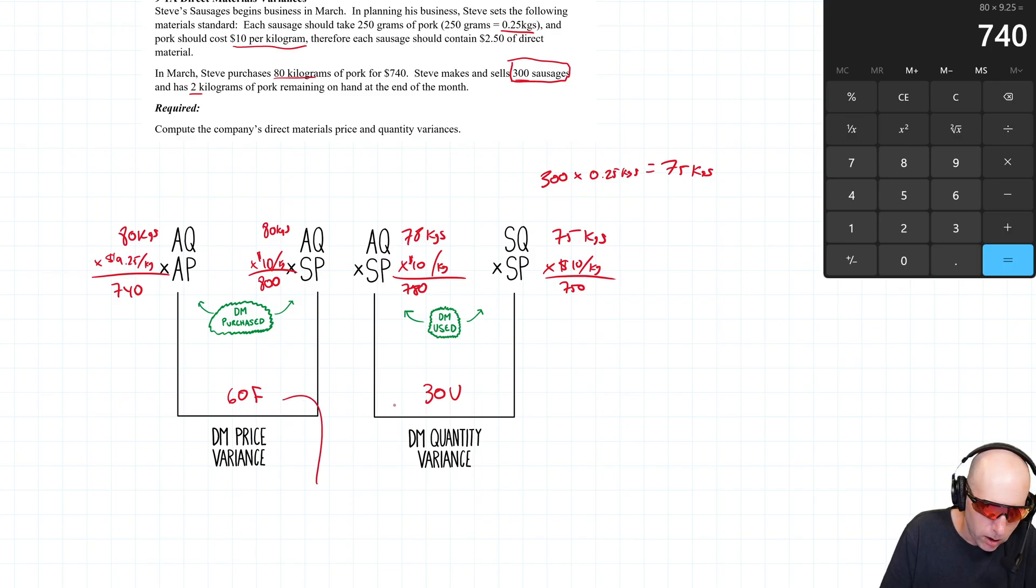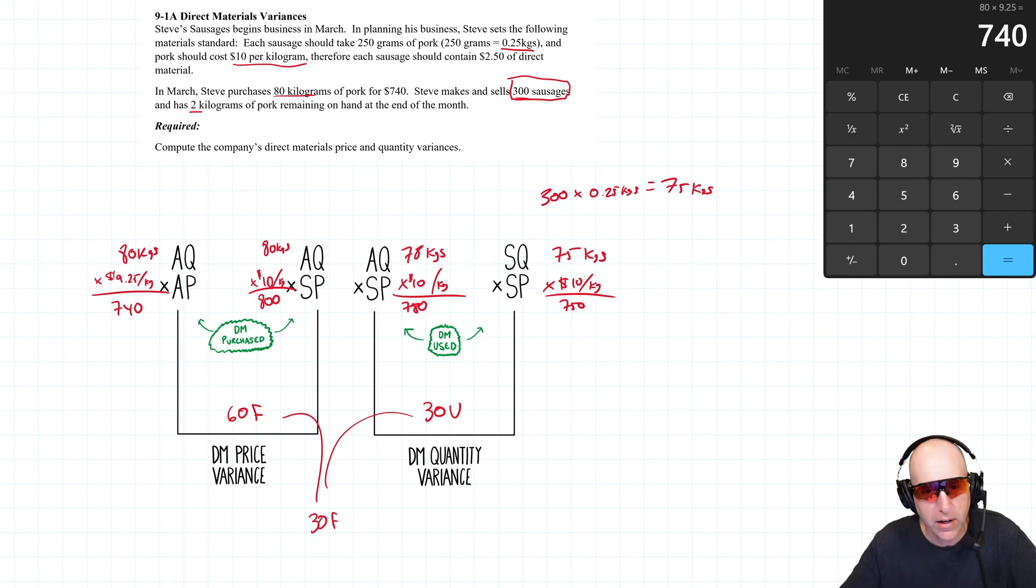So overall, 60F and 30U combined for 30F, right? Take the F minus the U and there you go. We end up at 30 favorable overall for materials variances.